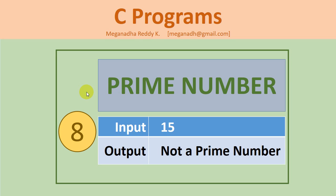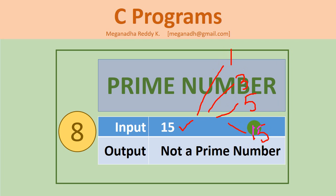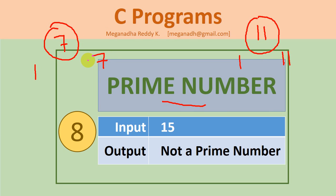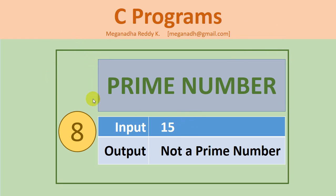Hi, this is Meghna. In this video we're going to learn how to write a C program to check whether the entered number is a prime number or not. For example, 15 is divisible by 1, 3, 5, and 15 — so it's not a prime. A prime number is something divisible only by 1 and itself, like 11 or 7.